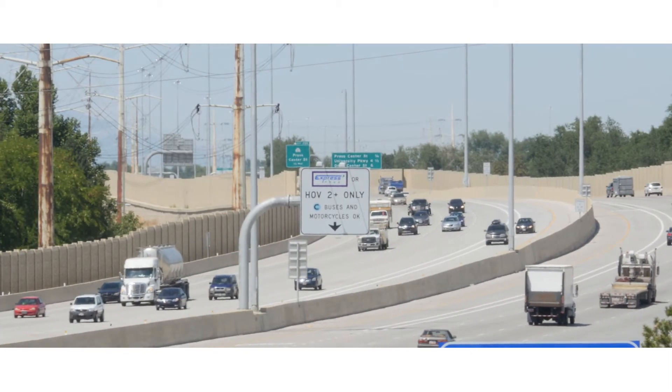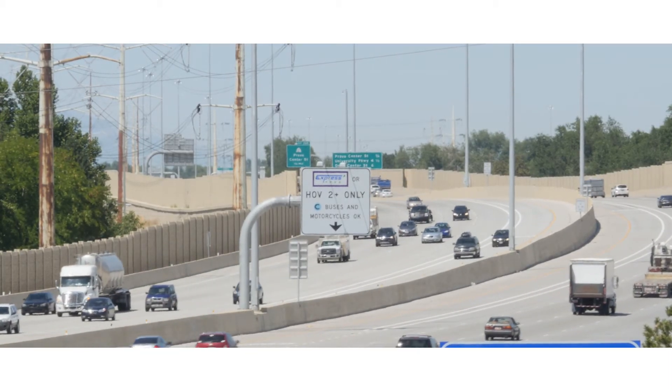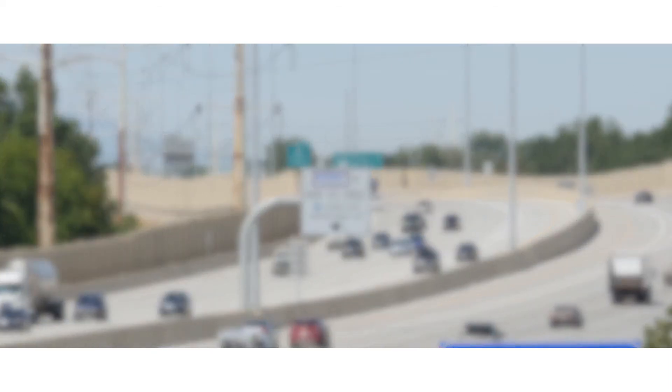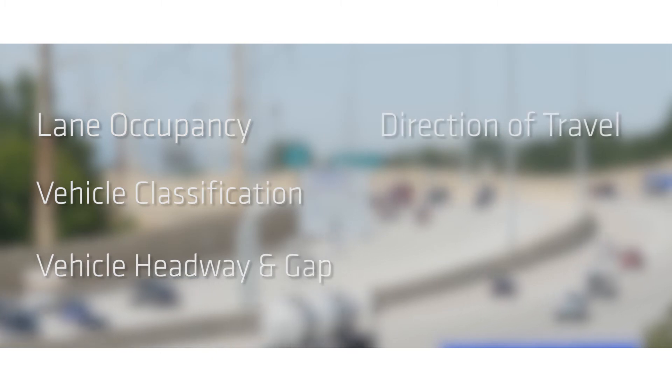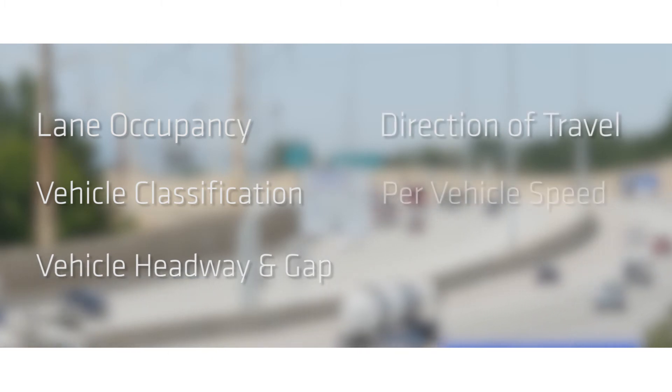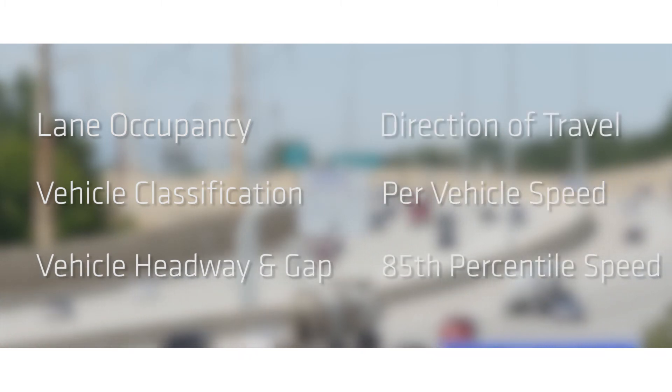As a result, an entire suite of data is available to traffic engineers, including lane occupancy, vehicle classification, vehicle headway and gap, direction of travel, per vehicle speed, 85th percentile speed, and more.